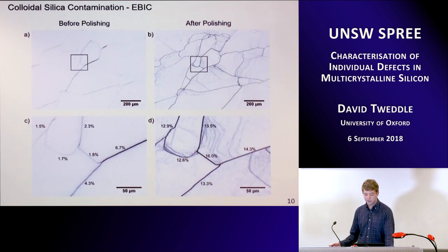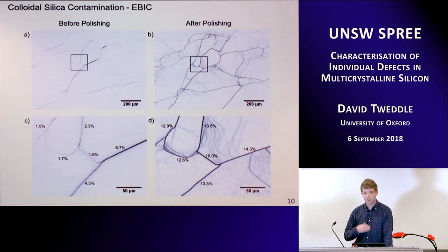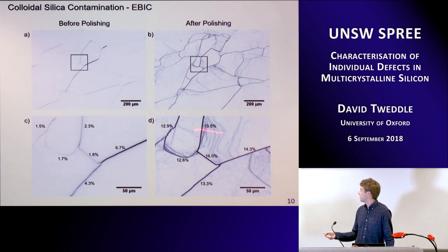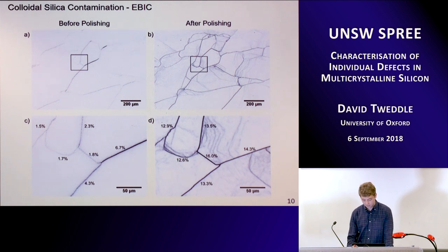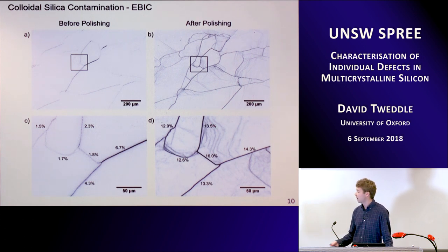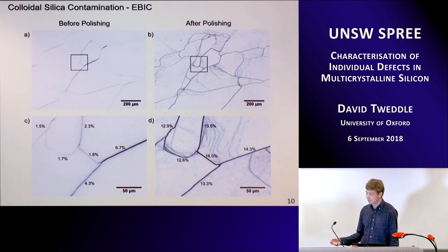Here is the same wafer before and after polishing. What we can see is our grain boundaries after polishing have absolutely lit up — they're becoming much more recombination active. We're also getting these intragranular dislocations that before we did not observe in EBIC. A clean dislocation is electrically inactive, but once they've become decorated, they've suddenly become recombination active and affect the lifetime of your solar cell. Contrast values are going from around 1.5% to 12.9%, significantly increasing.